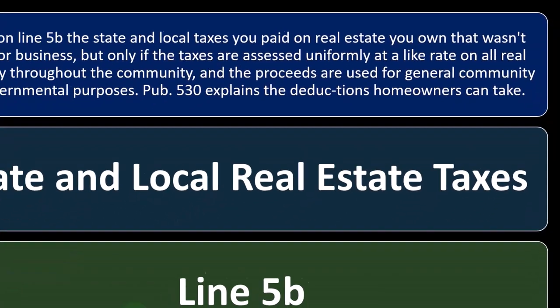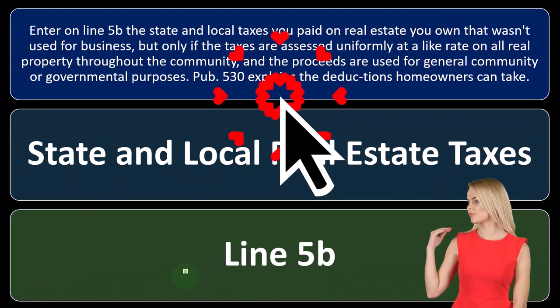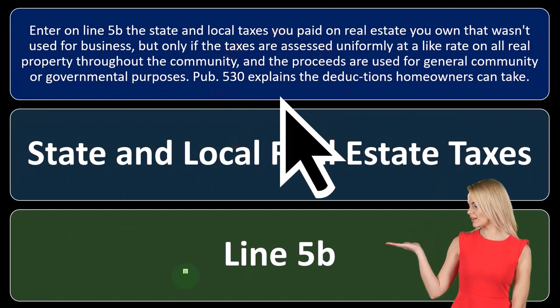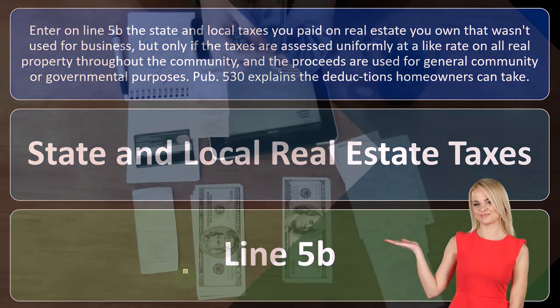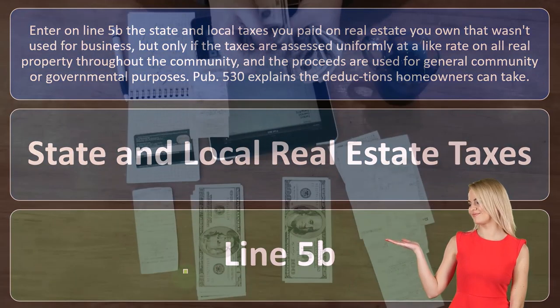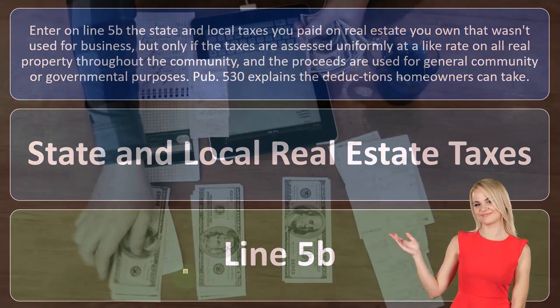This is the other big one. Someone owns a home — that's the big one. You've got the mortgage interest on it and then you've got the property taxes related to it as well.